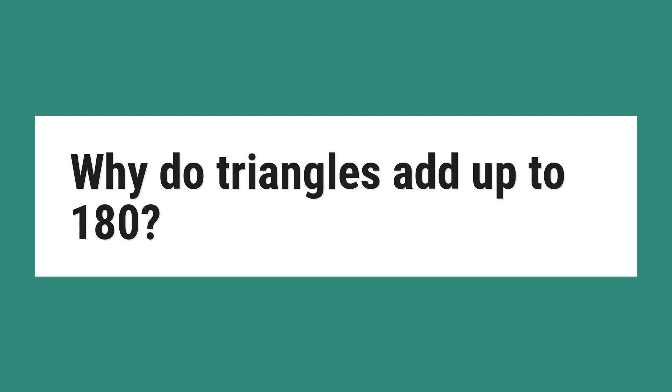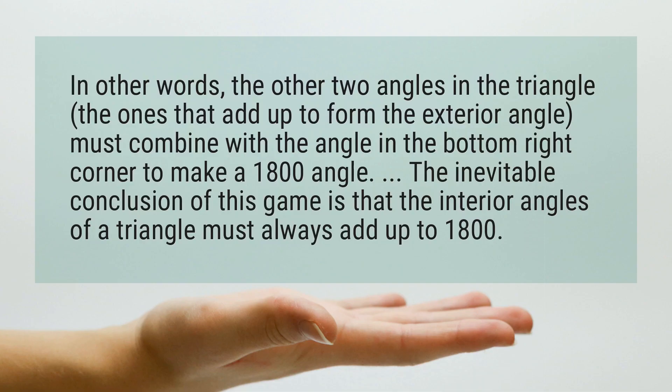Why do triangles add up to 180°? In other words, the other two angles in the triangle — the ones that add up to form the exterior angle — must combine with the angle in the bottom right corner to make a 180° angle.